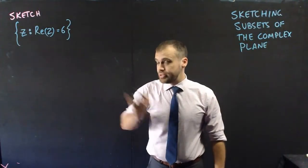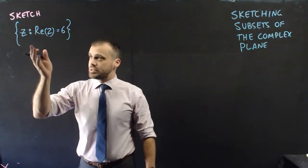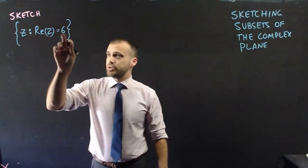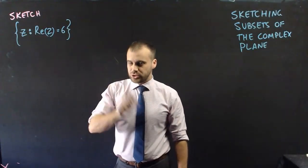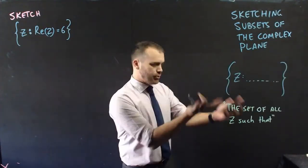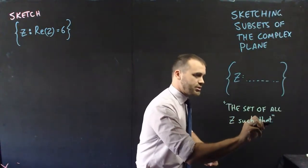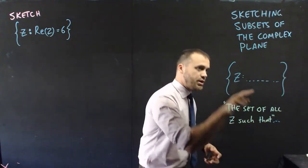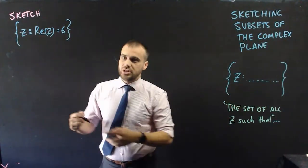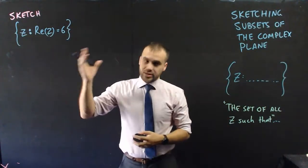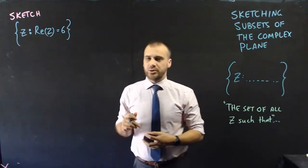Let's jump straight into questions. This says the set of all z such that their real components are equal to 6. Whenever you see this notation, it means the set of all z such that... and then we've got our condition. Our condition here is that the real component equals 6.